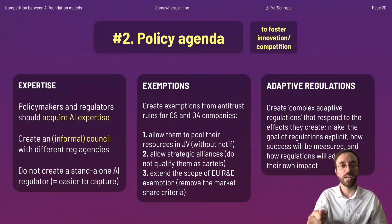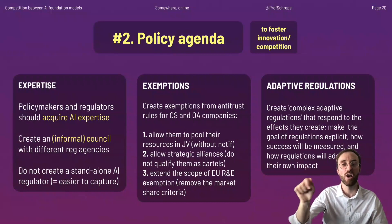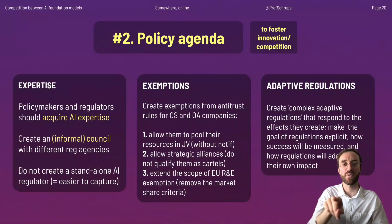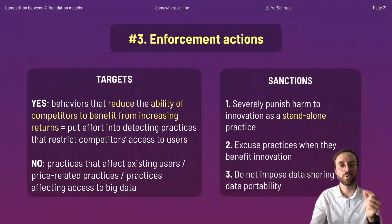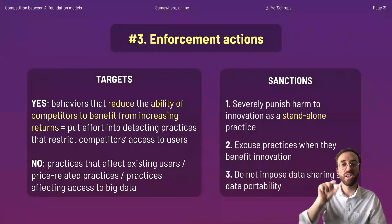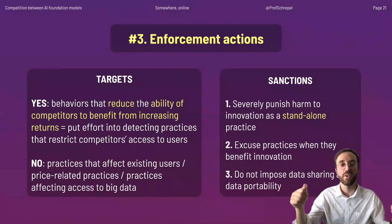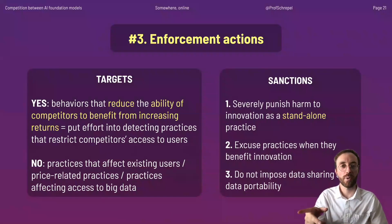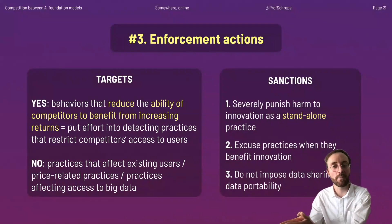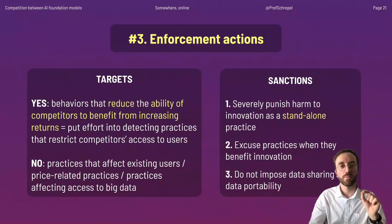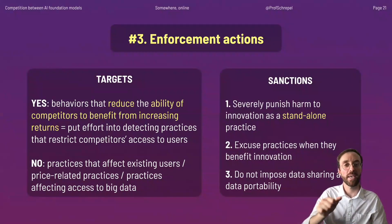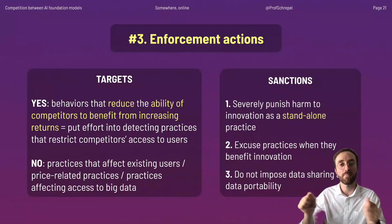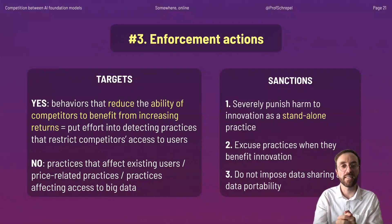Last, we develop what we call adaptive regulations — regulations that document the effects they produce on the market and adapt to those effects to better increase the common good. Our final point concerns enforcement: the absolute priority for governmental agencies should be to target behaviors that reduce other companies' ability to benefit from increasing returns, i.e., the learning effect. Practices affecting prices or access to big data are less defining and shouldn't be given priority. Practices reducing innovation should be severely punished, while those that may increase innovation should be balanced or exempted if they benefit competition.